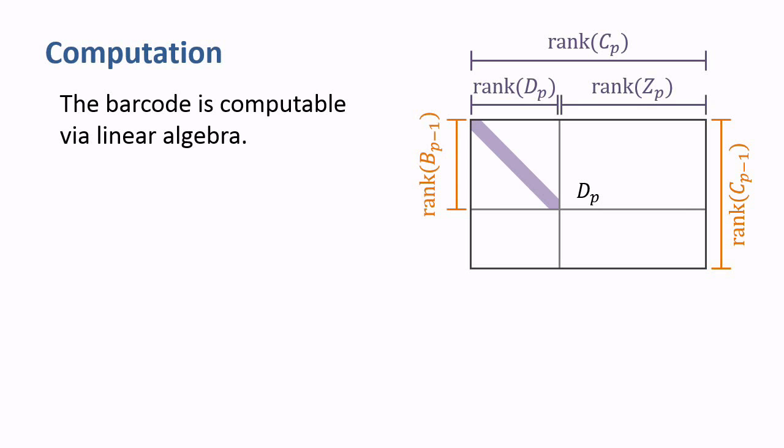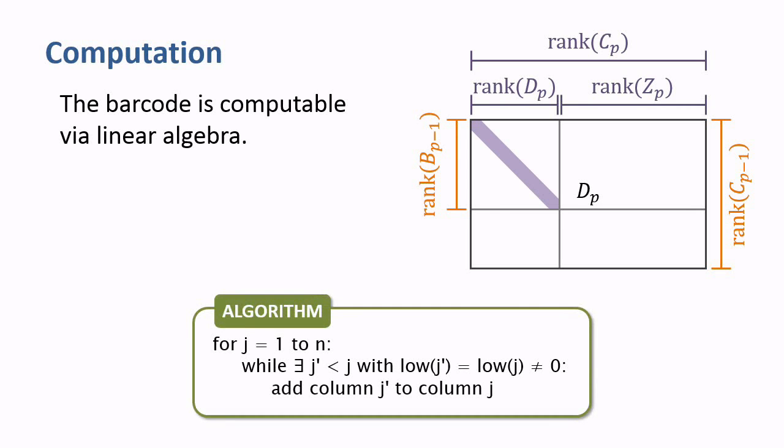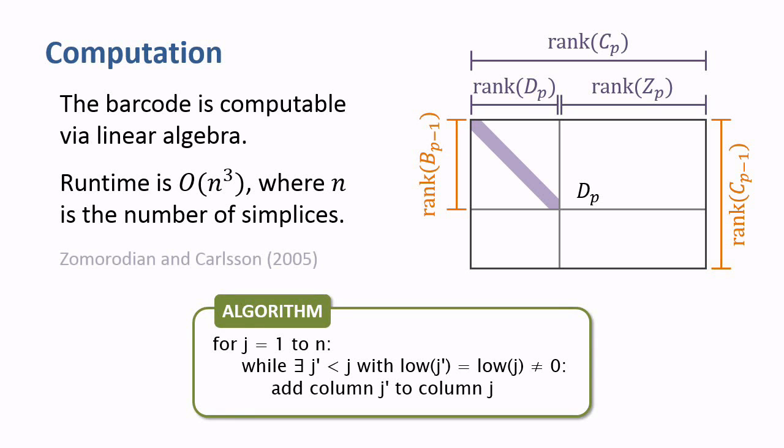Persistent homology is also computable via linear algebra. Standard algorithms exist to compute barcodes. The worst case runtime of these algorithms is cubic in the number of simplices, although the computation is rarely worst case. In addition, clever data structures and topological simplification can speed up the computation significantly.